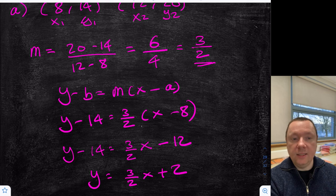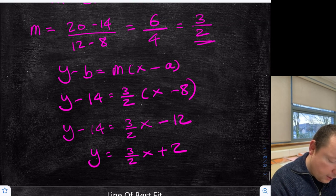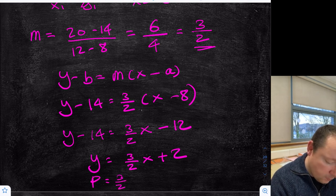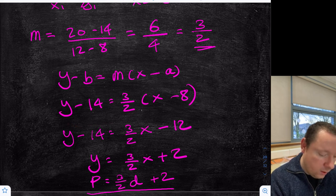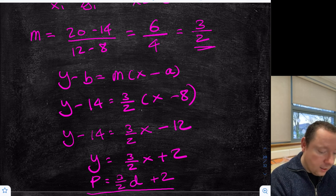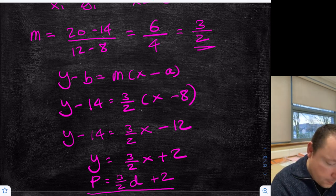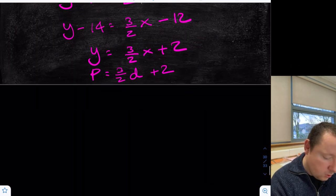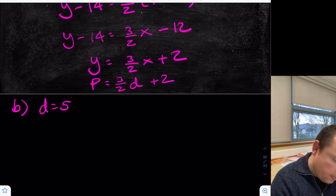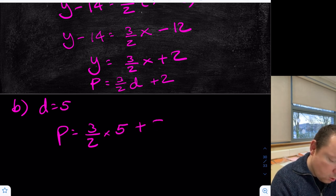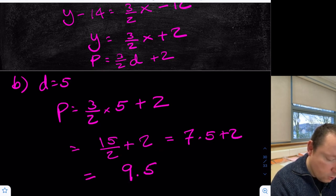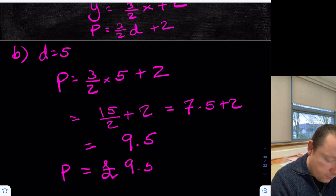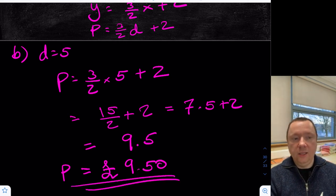Swapping in our P and D — P was on the y-axis and D was on the x-axis. So we can write: P equals 3/2 D plus 2. It's much easier to leave the fraction in when you want P equals to work out the cost. For Part B: calculate the cost of a journey of 5 miles, so D equals 5. P equals 3/2 times 5 plus 2, which is 15/2 plus 2, which is 7.5 plus 2, equals 9.5. So the cost P equals £9.50 — don't leave your answer as 9.5, that's not money.